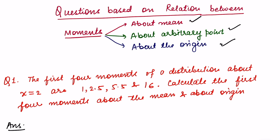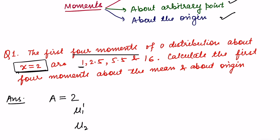Let us move on and understand the first question. The question says the first four moments of a distribution about x equals 2. This means our arbitrary point A equals 2, so mu 1 dash, mu 2 dash, mu 3 dash, and mu 4 dash are given — that is, moments about the arbitrary point — and their values are 1, 2.5, 5.5, and 16.